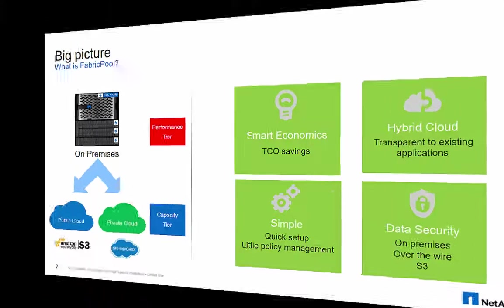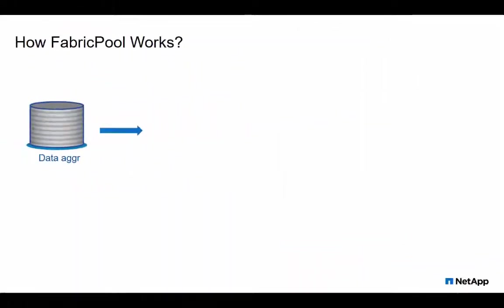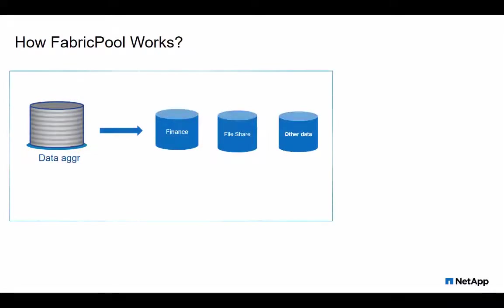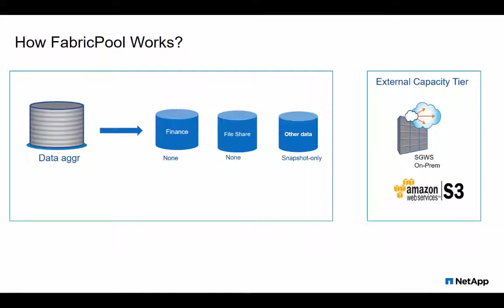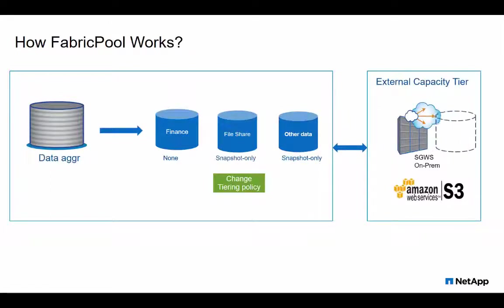Now let's see how FabricPool works. You can attach a capacity tier to SSD aggregates and set tiering policies on the SSD volumes. Currently supported tiering policies are snapshot-only, which is the default, or backup — where data is tiered to the capacity tier as SnapMirror or SnapVault destination — or set the policy to none.